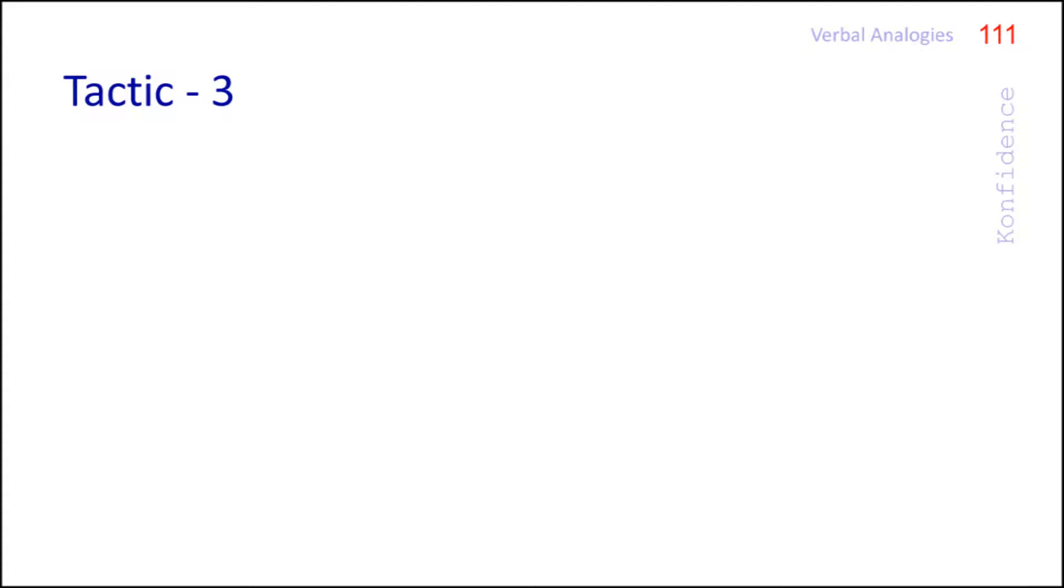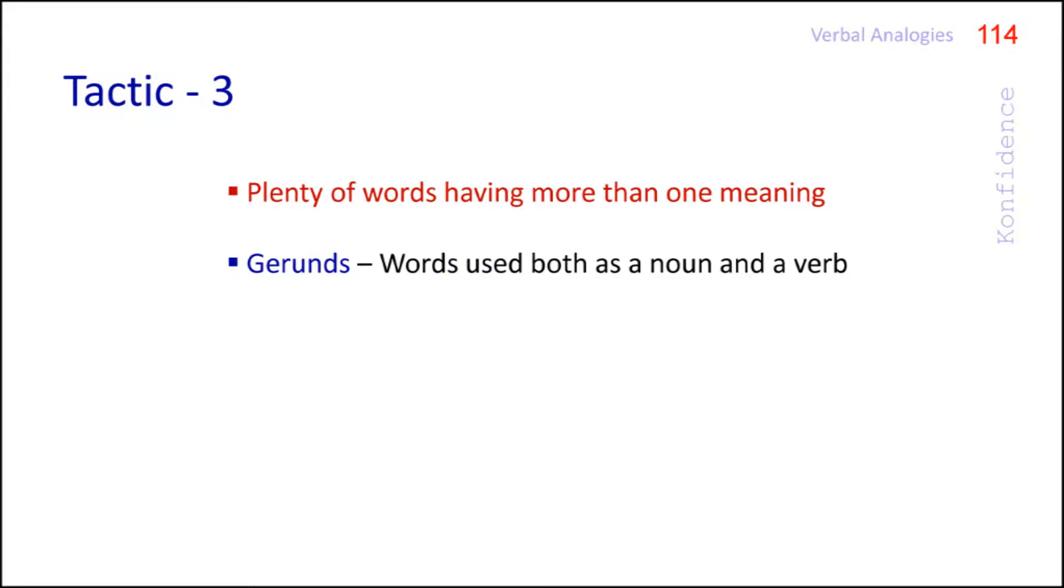Well, you know, in English language there are plenty of words which are having more than one meaning. For example, gerunds. Gerunds means words which are used both as a noun and verb. They belong to this category.